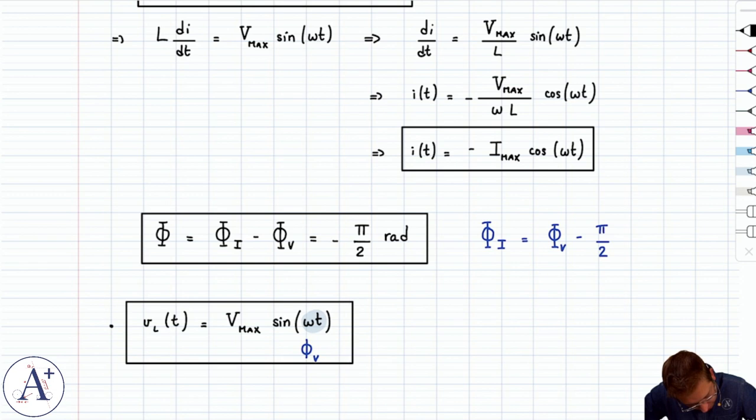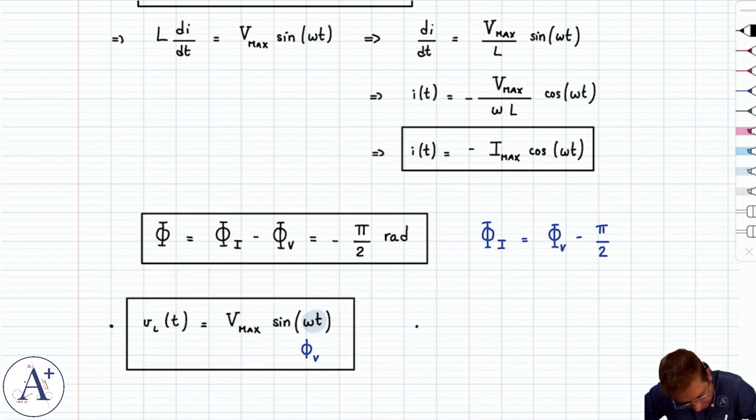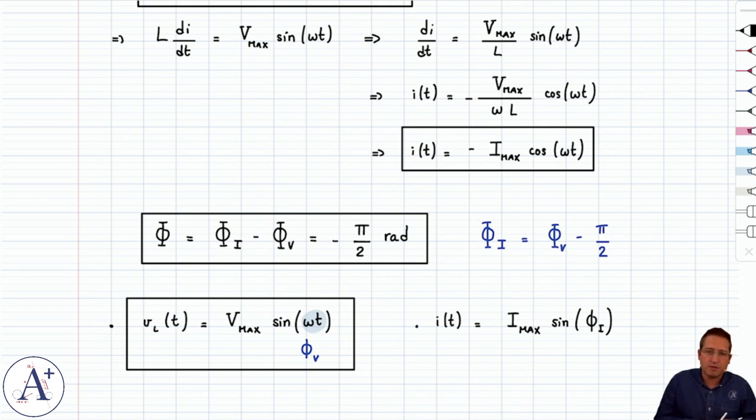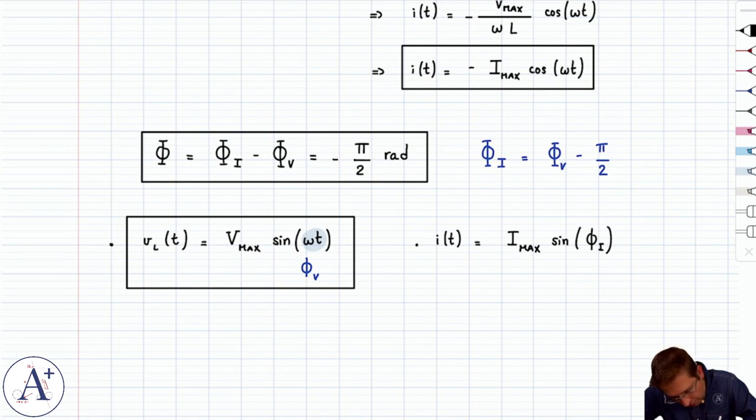And if we do the same thing for the current, well, the current i(t) is going to be Imax sin of whatever the phase is for the current, φ_i. But we know what φ_i is—it's φ_v minus π/2, and so it's ωt minus π/2.